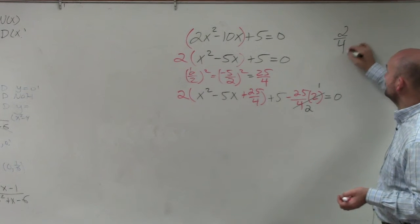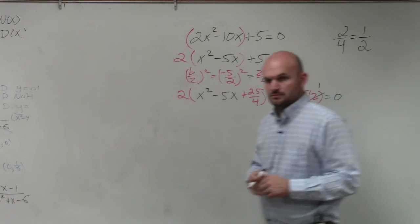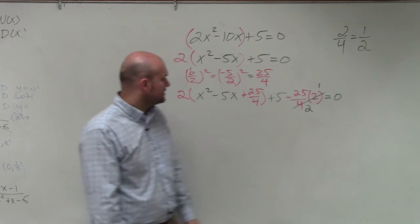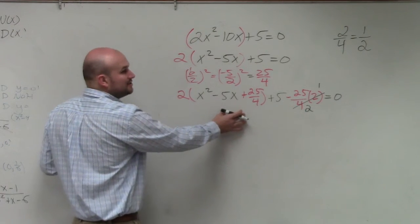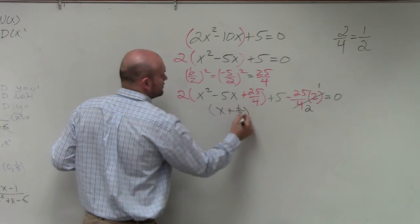2 over 4 is equivalent to 1 over 2, right? So whenever you guys have fractions, always look to simplify your fractions. All right. Now, this, you might not know the factored form of this. That's why I always said x plus b divided by 2 squared.